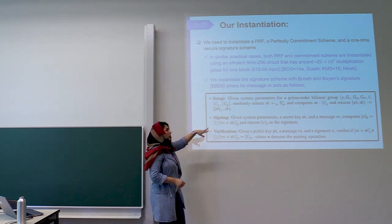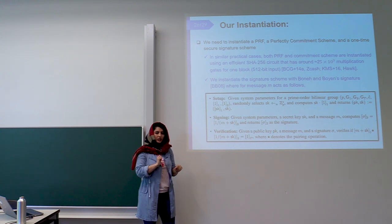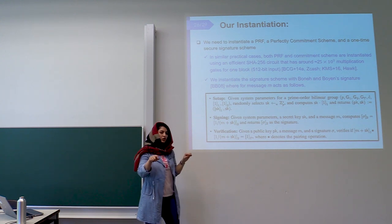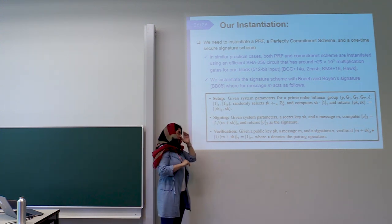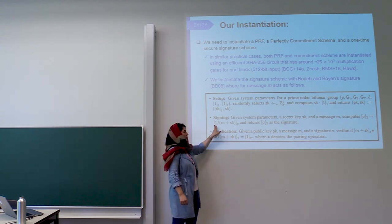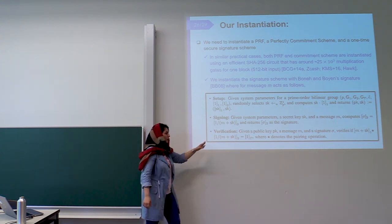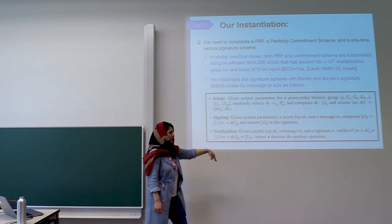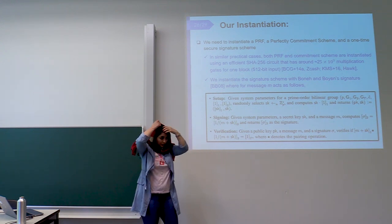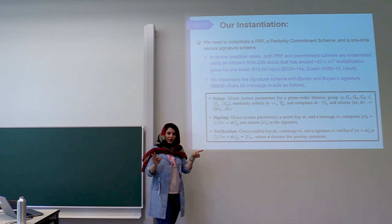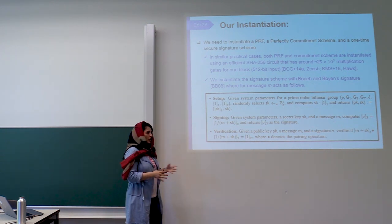How does the Boneh-Boyen signature scheme work? In setup, the signer picks a secret key and creates the public key as G1 to the power of the secret key. For signing, in the second group it computes 1/(M + secret key). For verification, they check this pairing equation. In this signature scheme there is just one pairing. So we used it and added just one pairing to the original verification. The original version has three pairings, we added one, making it four pairings in verification.